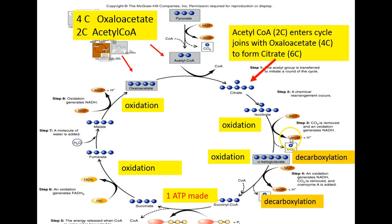Each acetyl coenzyme A going through the cycle produces four oxidation steps: three oxidation steps with NAD+ as the electron carrier producing NADH, and one oxidation step with FAD as the electron carrier producing FADH2. Also note the two decarboxylation steps per cycle, representing four decarboxylation steps per glucose molecule. Adding these four decarboxylation steps to the two decarboxylation steps from each of the two pyruvates in the transition step yields six carbons removed — representing the six original carbons from the glucose molecule that started in glycolysis.